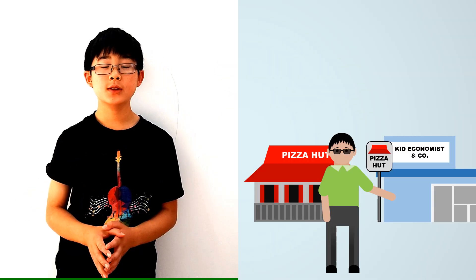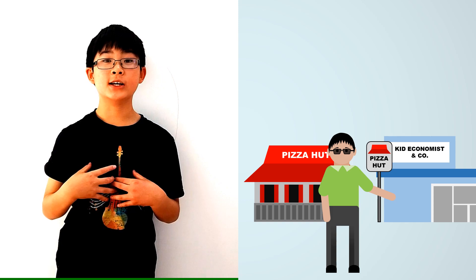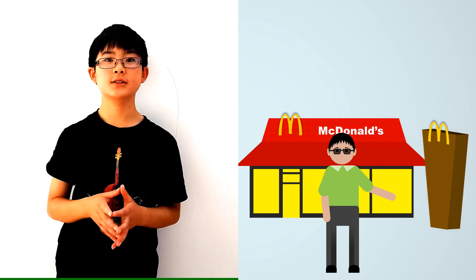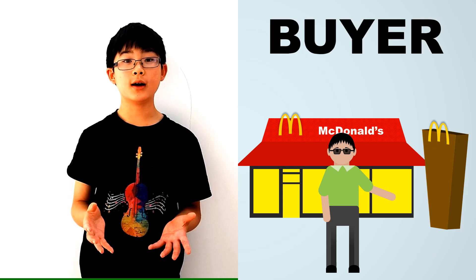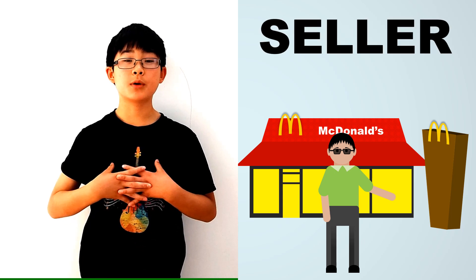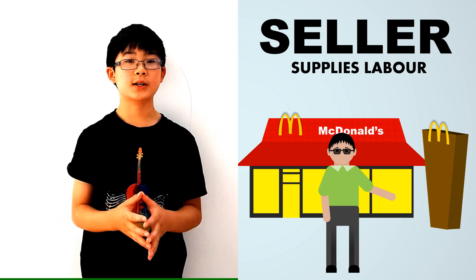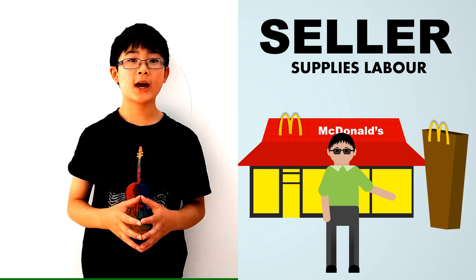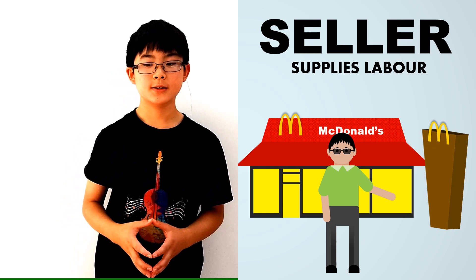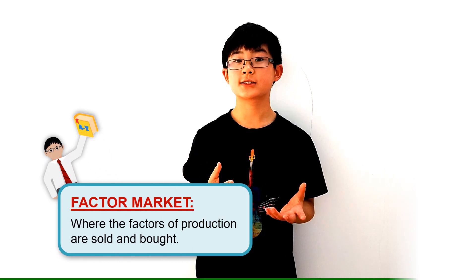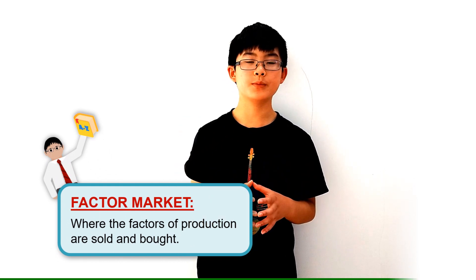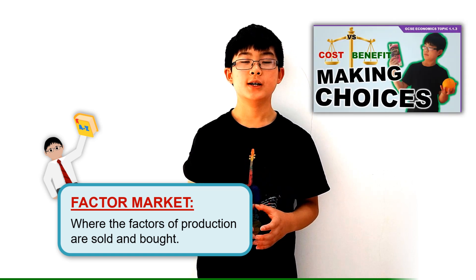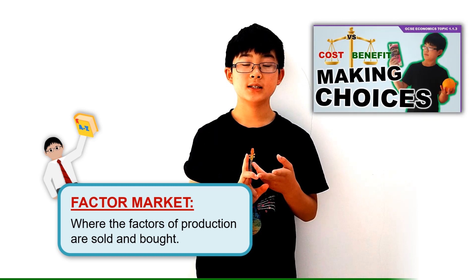Going back to the example, let's say I want to get a job at McDonald's just to earn a few bucks. Now, instead of being the buyer in this scenario, I am the seller. I supply labour to McDonald's. This is where we get onto the factor market. The factor market is where the factors of production are purchased. Which, if you remember from the second video of this series, is land, labour, capital, and enterprise.